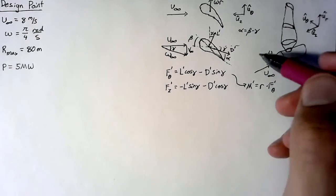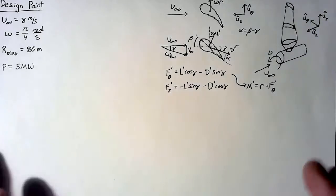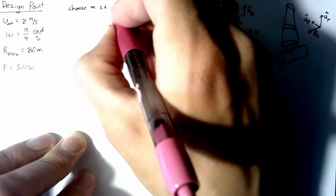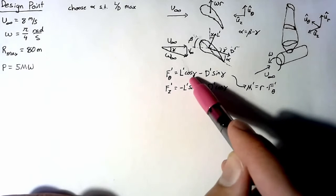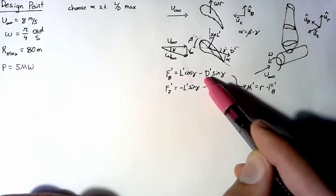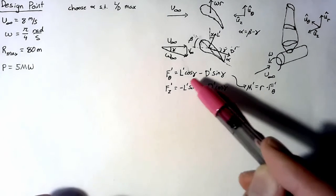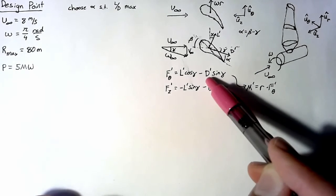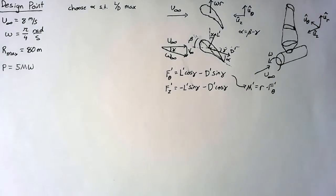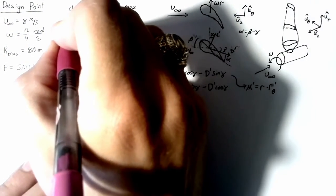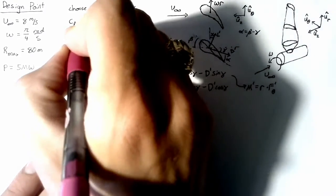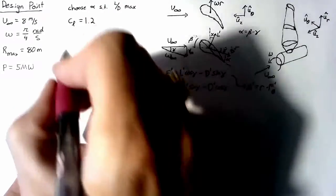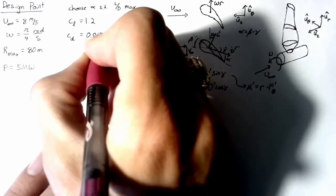And then we're going to have to choose some values for our airfoils that we're using. Let's just say right now that we're going to choose alpha so that lift over drag is maximum. The reason we're choosing this is because our lift is contributing to our moment, whereas our drag is actually taking away from it. A good starting point is to say that we want our L' to be as large as possible, and our D' to be as small as possible. Next we need to choose some airfoil, and I'm not going to choose a specific one, but we are going to say that the Cl at L over D max is going to be equal to 1.2, and Cd is equal to 0.08.